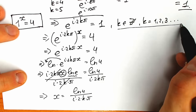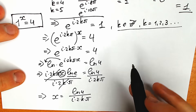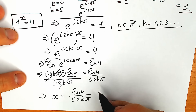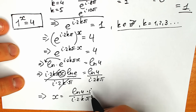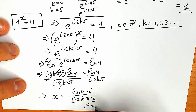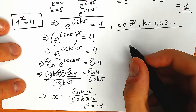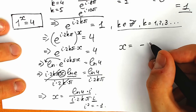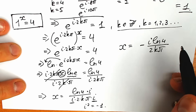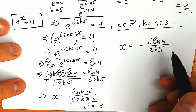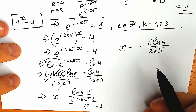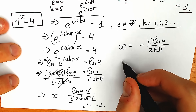So x equals natural log 4 over i times 2kπ, where k is an integer. Now I suggest multiplying numerator and denominator by i. Since i² equals −1, we get a negative sign. So our x equals minus i times natural log 4 over 2kπ. This is our complex value — a complex root, because we have the imaginary unit. In the beginning I proved we don't have real number roots; we have only a complex root.